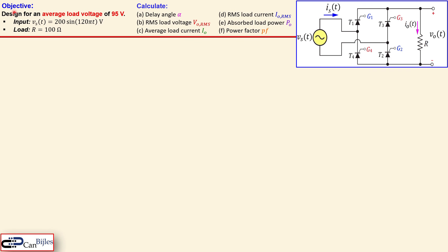Our objective is shown here: we want a design for an average load voltage of 95 volts. We have an input pure sine wave of 200 volts peak and 60 hertz frequency, given here as 120 pi radians per second. The load will be pure resistive — in this case 100 ohms.